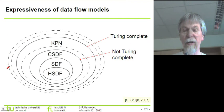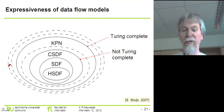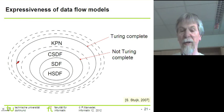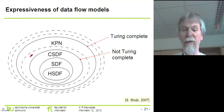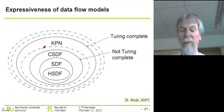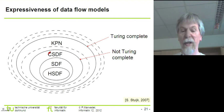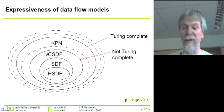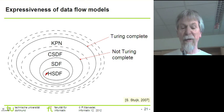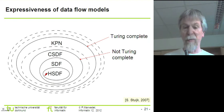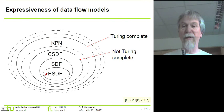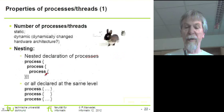We have already seen a chart comparing the expressiveness of various data flow models. For Kahn process networks, we are Turing complete, whereas for cyclostatic data flow, synchronous data flow, and homogeneous synchronous data flow, we are not Turing complete. These are the distinctions when comparing the power of different models.